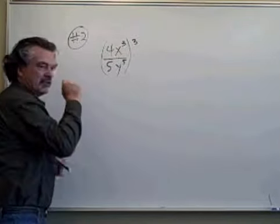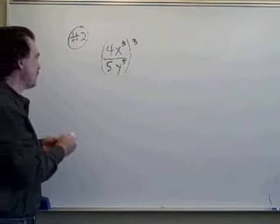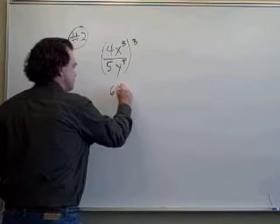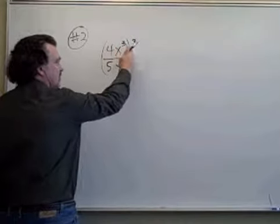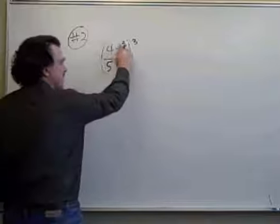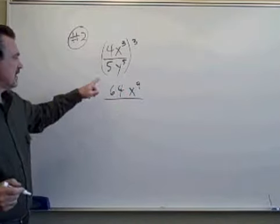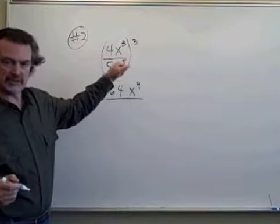So 4 to the third, that's 4 times 4 is 16 times 4 is 64. x to the third to the third, raising a power to a power, we multiply the exponents. So that's x to the ninth over 5 has to be raised to the third power.